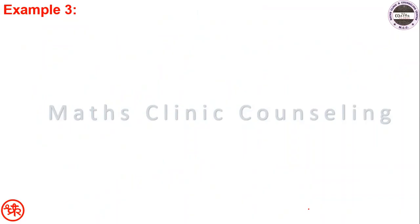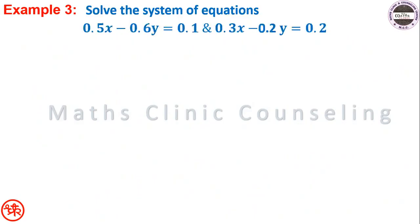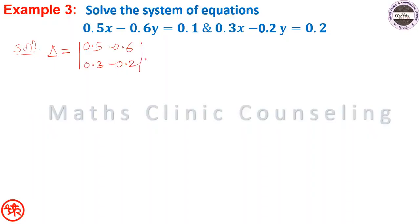Third example: solve the system of equations 0.5x minus 0.6y equal to 0.1, and 0.3x minus 0.2y equal to 0.2. Solution: delta equals the determinant [0.5, -0.6; 0.3, -0.2].